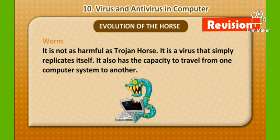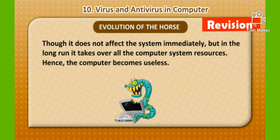The Worm virus is not as harmful as the Trojan Horse. It is a virus that simply replicates itself and also has the capacity to travel from one computer system to another. Though it does not affect the system immediately, in the long run it takes over all computer system resources and the computer becomes useless.